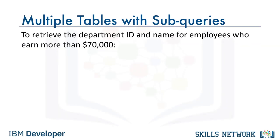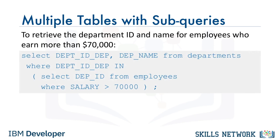Now let's retrieve the department ID and department name for employees who earn more than $70,000. To do so, we will need a subquery on the employees table to satisfy the salary criteria, and then feed it as input to an outer query on the departments table in order to get the matching department info: SELECT department_ID, department_name FROM departments WHERE department_ID IN (SELECT department_ID FROM employees WHERE salary > 70000).